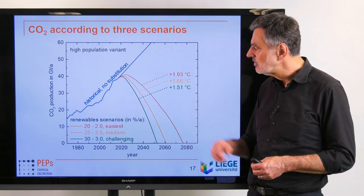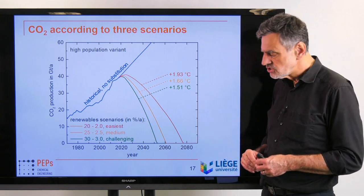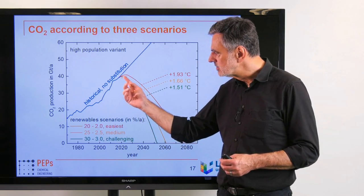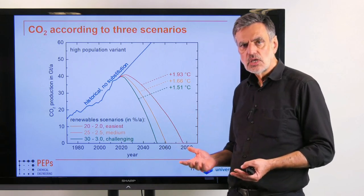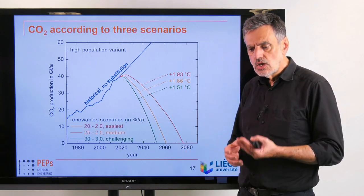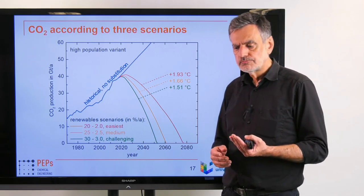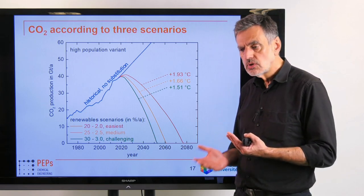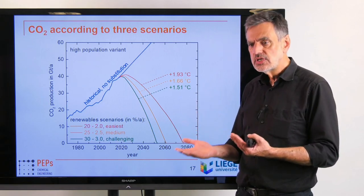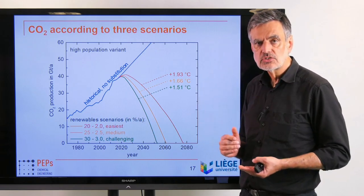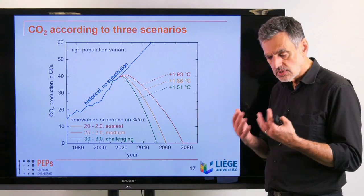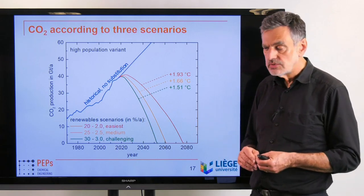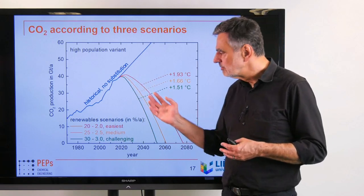Here we see CO2 production in gigatons per year as a function of time. These are the historical values. If we don't change our energy system, we will continue on the current trajectory. With the three scenarios, we decrease CO2 emissions by substituting sustainable energy technologies and can reach the climate goals of 1.5 to 2 degrees centigrade agreed in the Paris Agreement. In agreement with other studies, we need to finish the energy transition by roughly 2050 for the 1.5-degree goal, and by 2075 for the 2-degree goal.